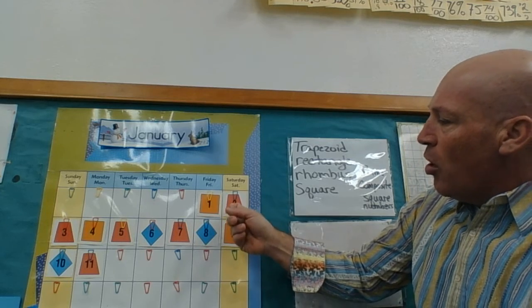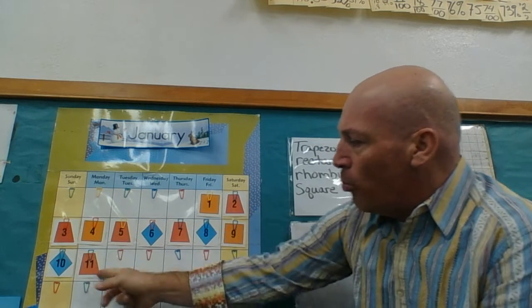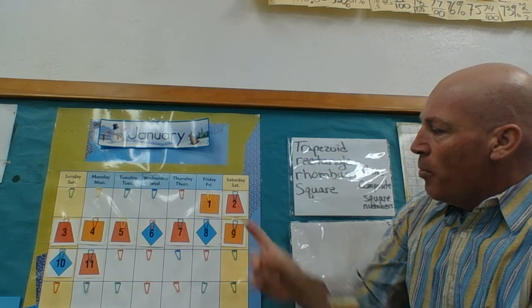So we know that the orange trapezoids are all prime numbers. But now look at this.